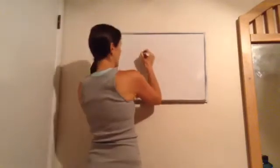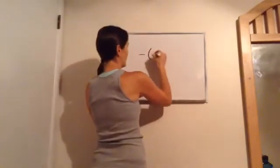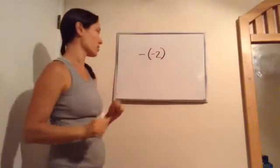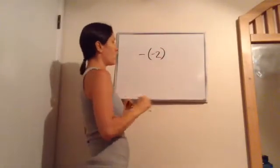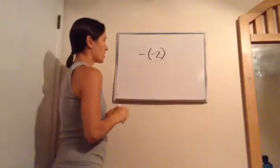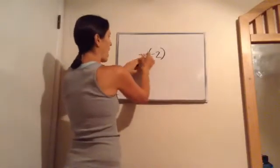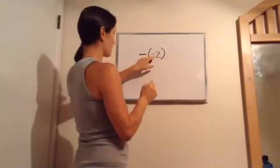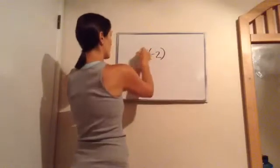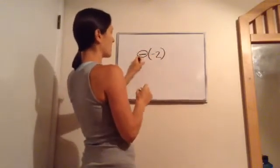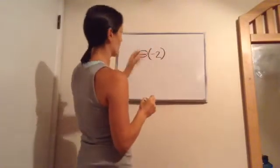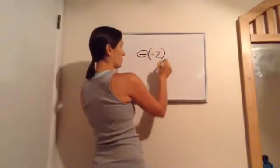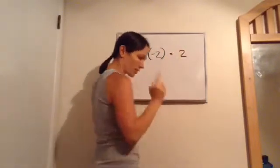If you were to see a negative negative 2, that kind of looks confusing. I want to teach you a method: you want to say the opposite of negative 2. The one on the outside means the opposite of whatever's in here. So the opposite of negative 2 would become positive 2.